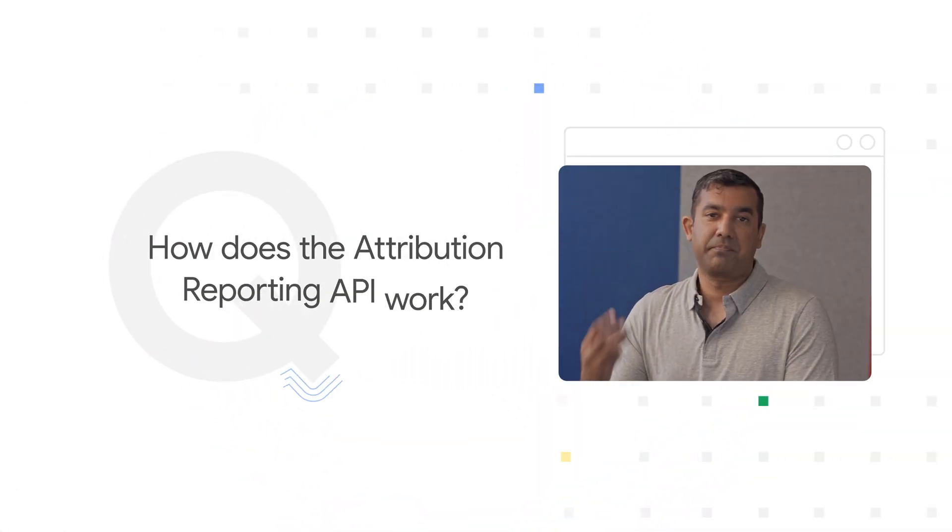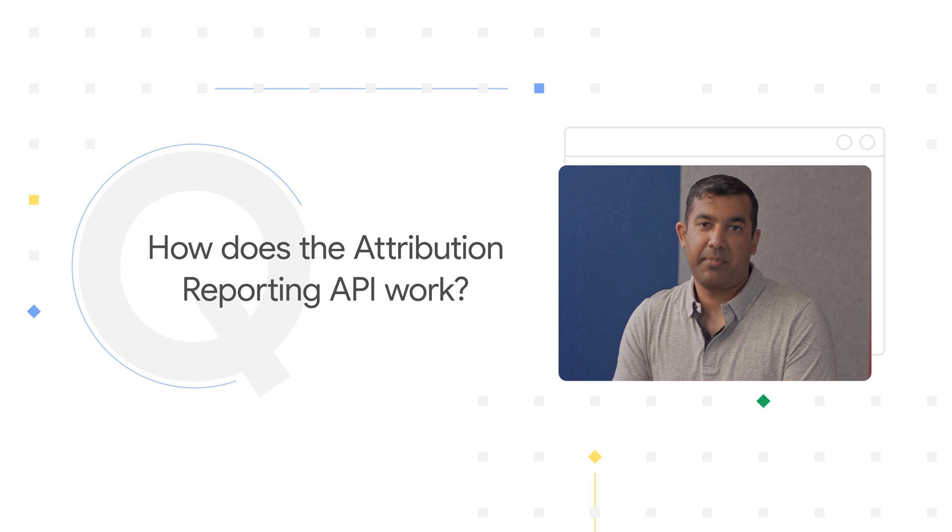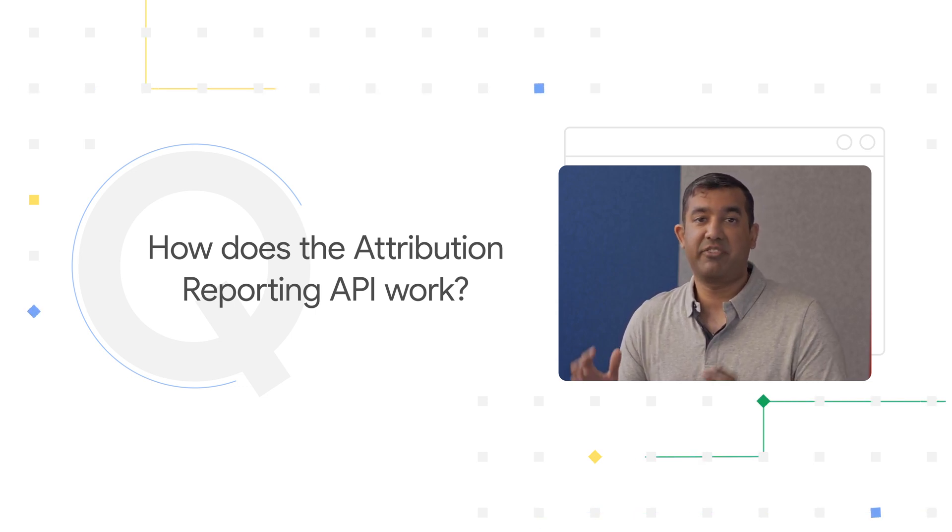Question 3: How does the Attribution Reporting API work? The Attribution Reporting API gives access to different types of insights that an advertiser or an ad tech provider may access via event-level reports, which help provide transaction-level information such as when a specific ad click or view likely resulted in a conversion, and summary reports, which deliver richer, more detailed conversion data such as purchase values or ROI, over groups of people.